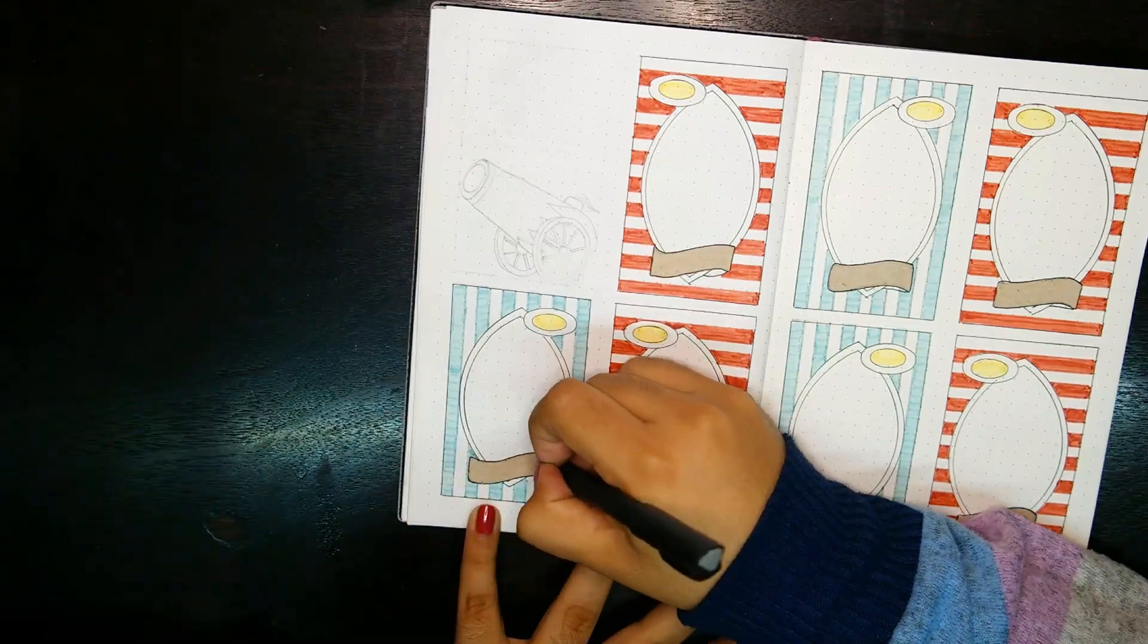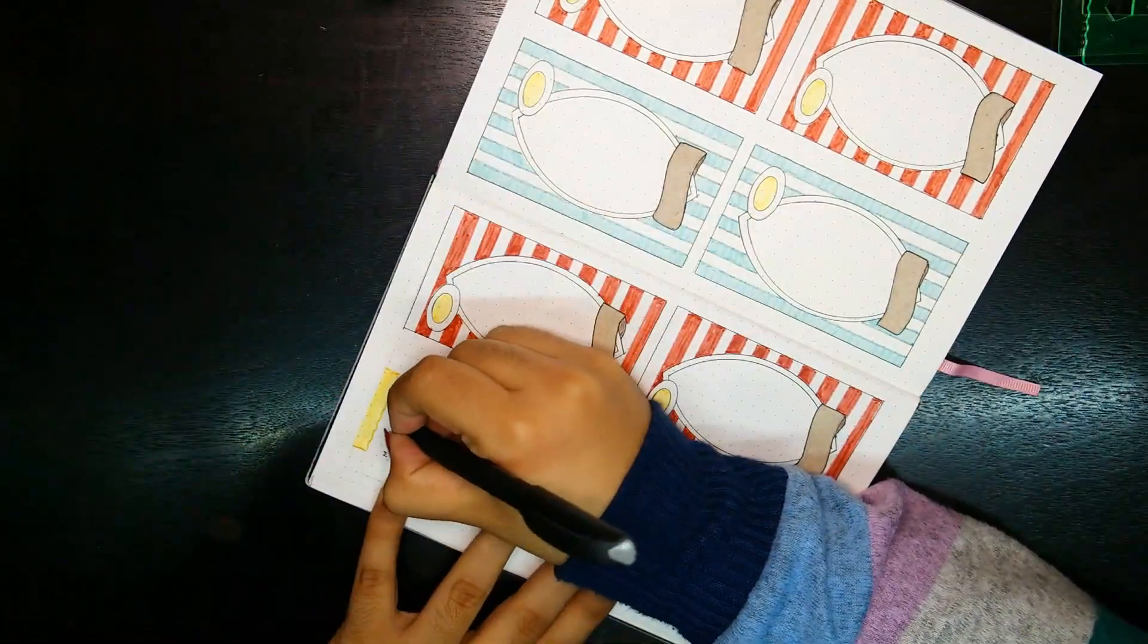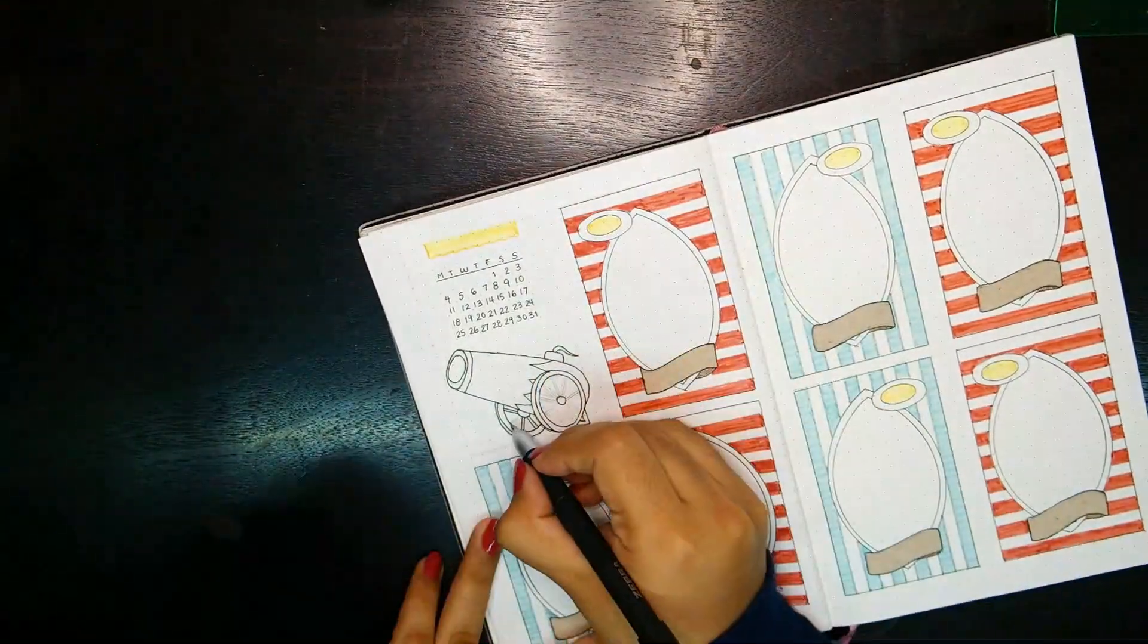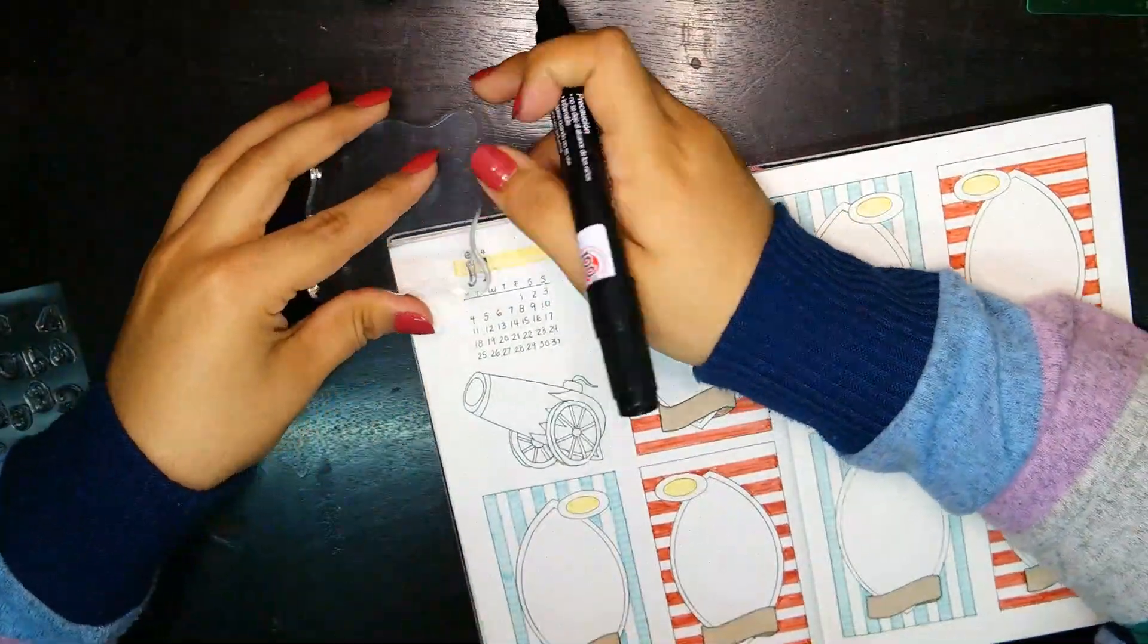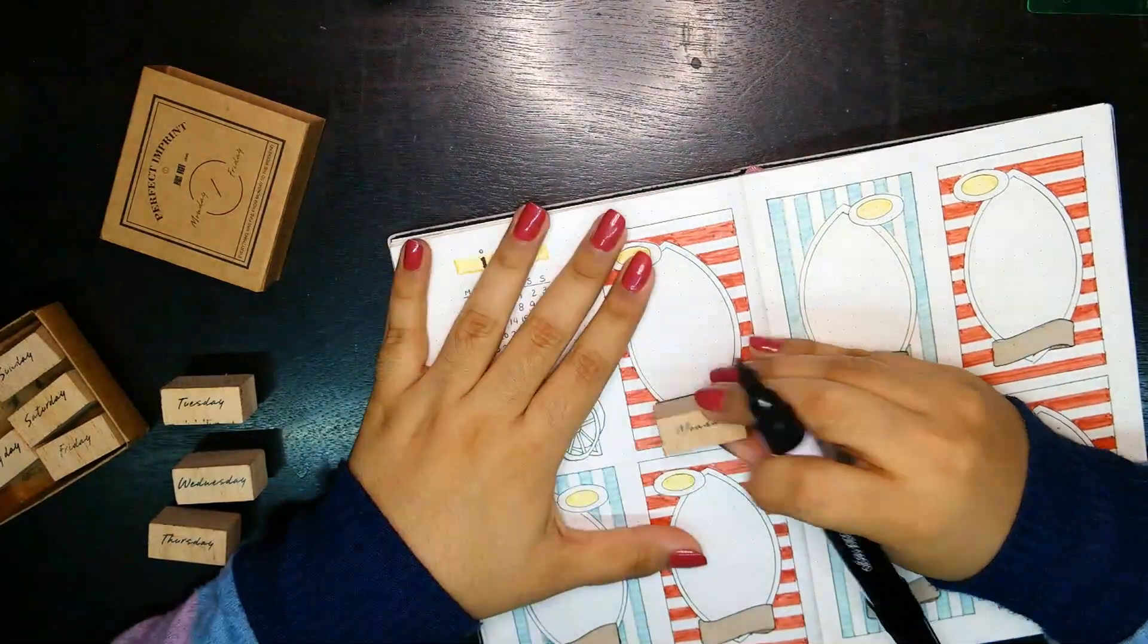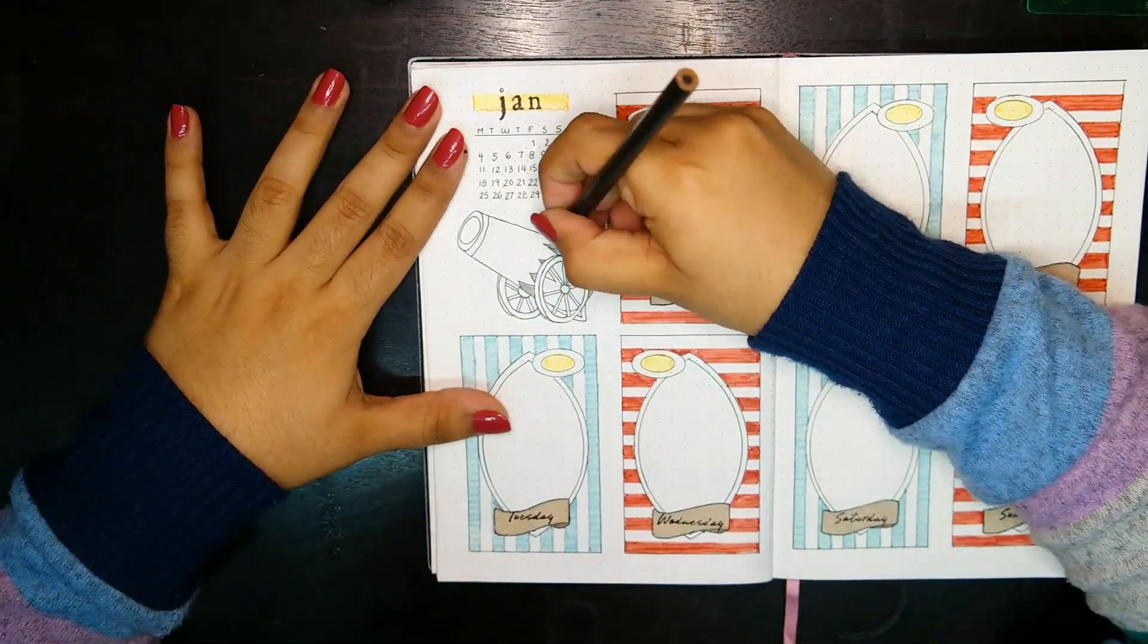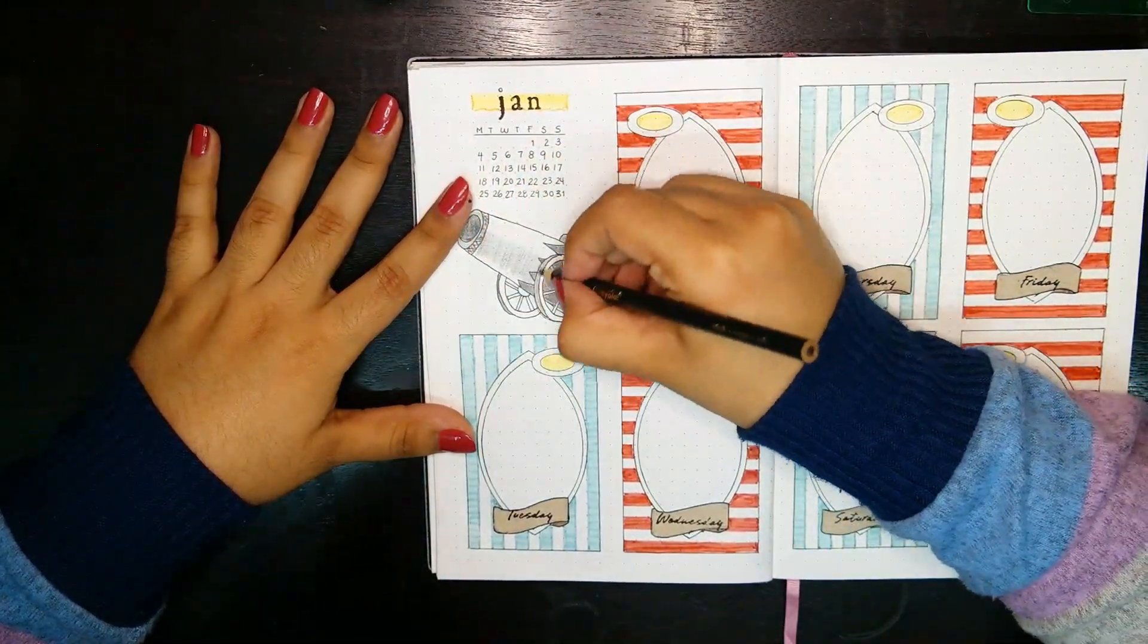Now that the daily boxes are done, we'll move into the free space where I personally like to add a mini calendar to later highlight the current week that we are at in the spread. Just below that, I'm drawing a circus cannon without the human cannonball, though. I added a few more details, stamping January on top of the calendar as well as every day of the week with my weekly stamps on their own banner. By the way, I just realized I didn't add the dates on the boxes, but I'll make sure to do that after finishing this video. With the cannon all filled in, this monthly setup is completed.